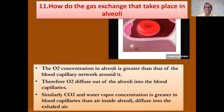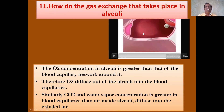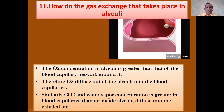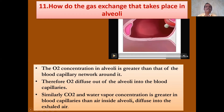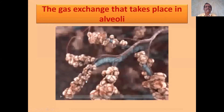The oxygen concentration in the alveoli is greater than that of the blood capillary network, therefore oxygen diffuses out of the alveoli into the blood capillary. Similarly, carbon dioxide and water vapor concentration is greater in the blood capillary because those are taken from the body cells, so carbon dioxide and water diffuse from the blood capillary into the alveoli and are exhaled out. You have to talk about the concentration of oxygen and the concentration of carbon dioxide for this gas exchange in alveoli.